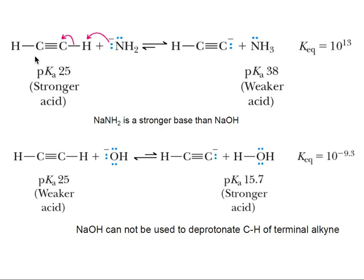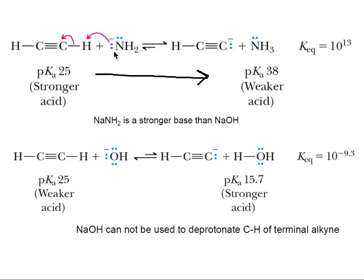Here we have another example: we have the terminal triple bond and NH2- comes and attacks. We've seen these reactions before. The question is whether NH2- is strong enough to deprotonate this acid. You compare the pKa values of the two conjugate bases using pKa values or ARIO. Because the alkyne is a stronger acid and NH3 is a weaker acid, the reaction moves forward — NH2- is strong enough to deprotonate that terminal hydrogen.